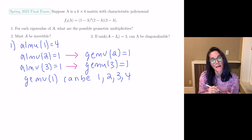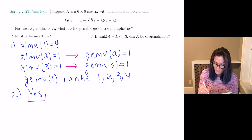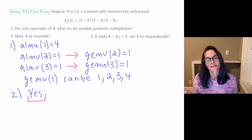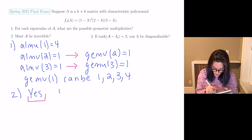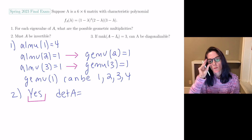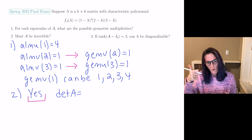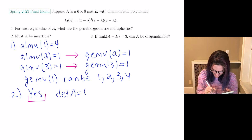Number 2: must A be invertible? Yes. A is invertible because 0 is not an eigenvalue. We can also calculate using the determinant: it would be 2 times 3 times 1 times 1 times 1 times 1, which is 6, and that is not equal to 0.